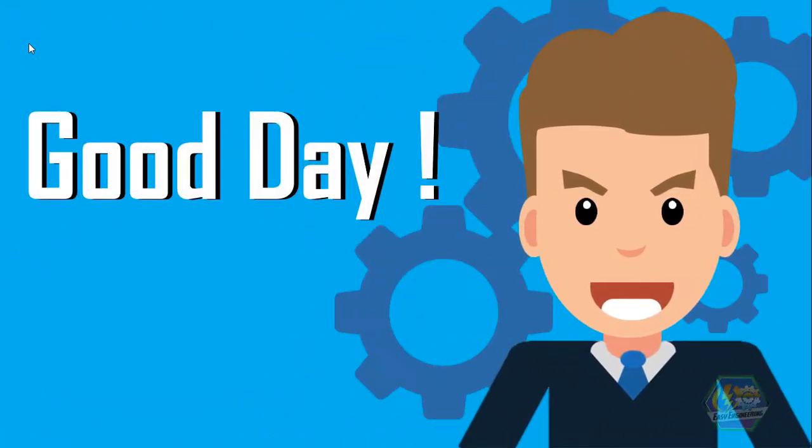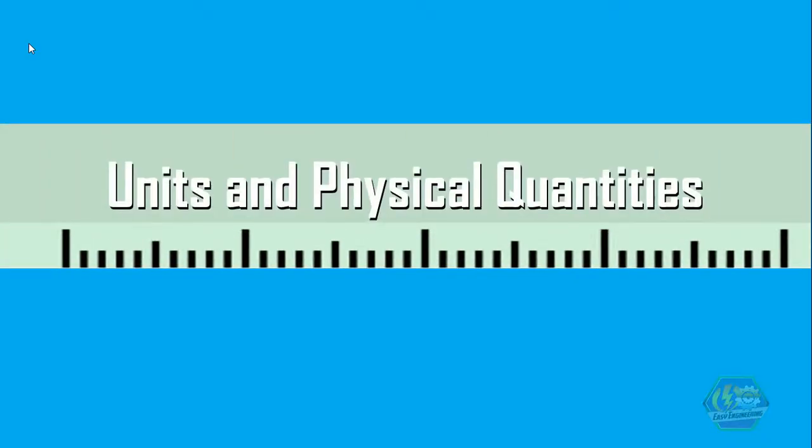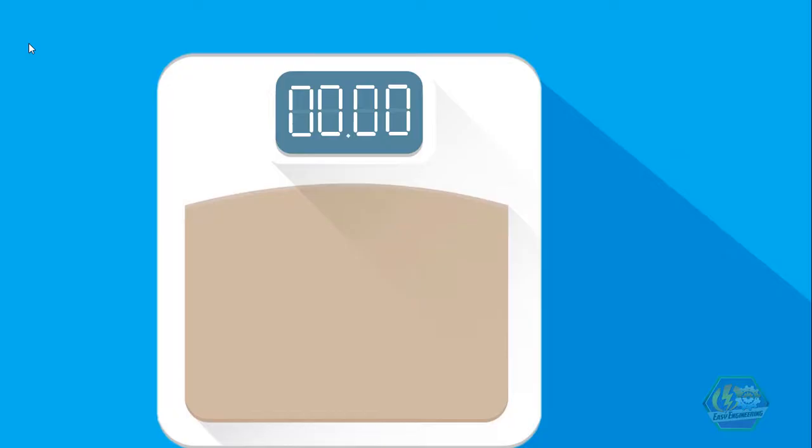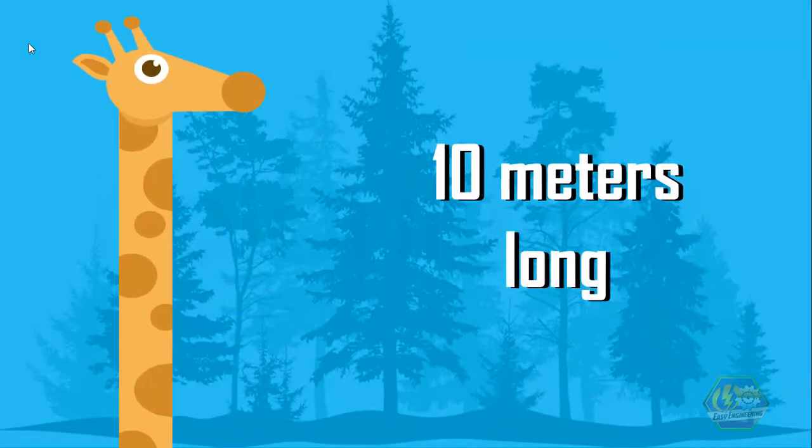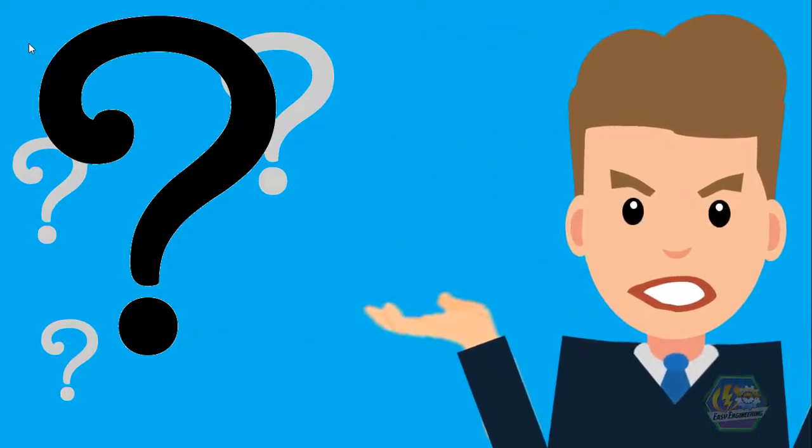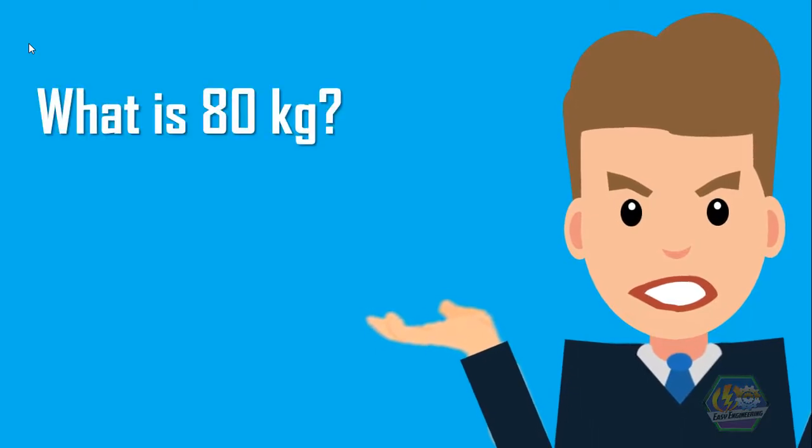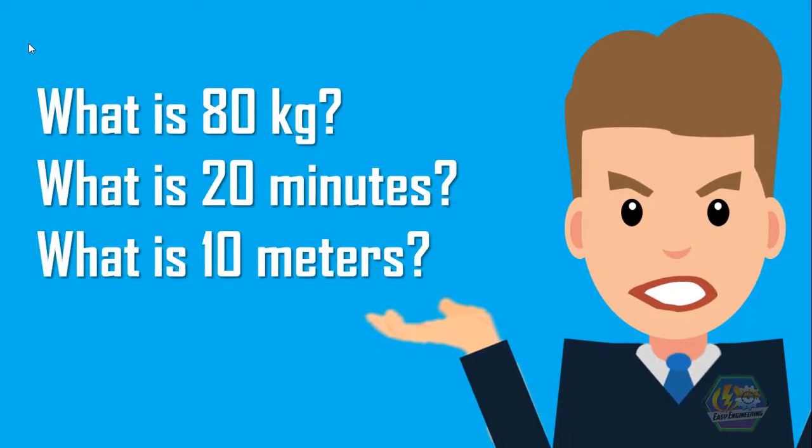Good day learners, this is Easy Engineering. This time we are going to talk about units and physical quantities. To begin with, let me give you some common examples. If I say I am weighing 80 kilograms, I am 20 minutes early, that is 10 meters long.